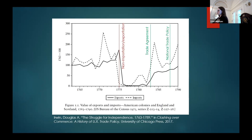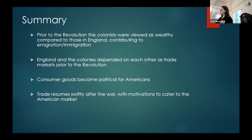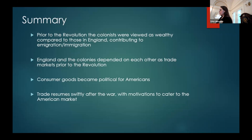Despite the war and animosity over trade and taxes, the prospects of the American market were enticing and important for British manufacturers. At the same time, the new nation was trying to create a history and a sense of national identity in a very short span of time. This created an opportunity for British goods with patriotic themes. Prior to the revolution, the colonists were viewed as wealthier than those in England, contributing to emigration. England and the colonies really depended on each other as trade markets, and consumer goods in the colonies became political.